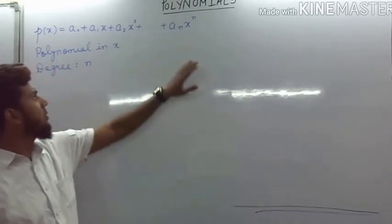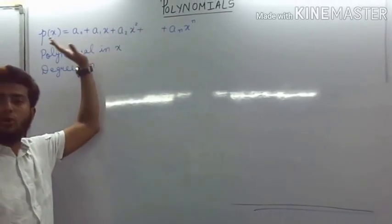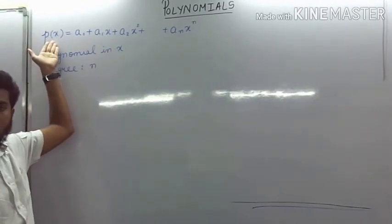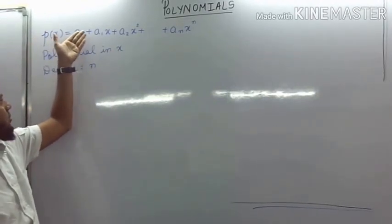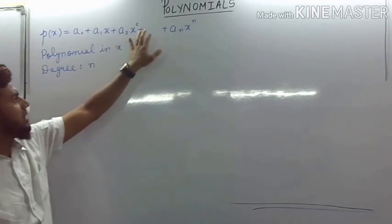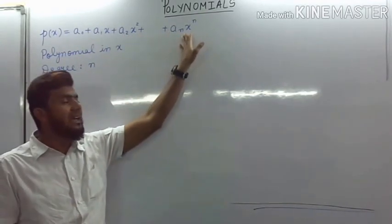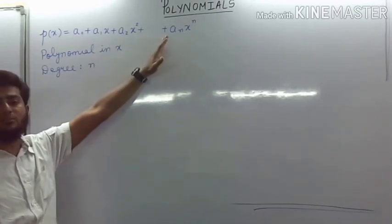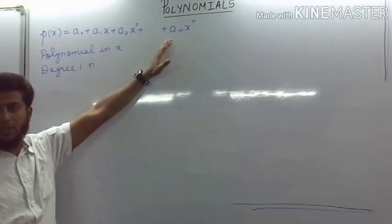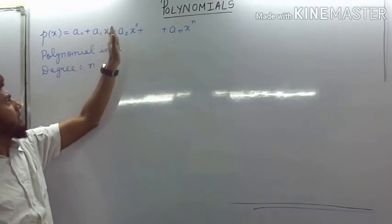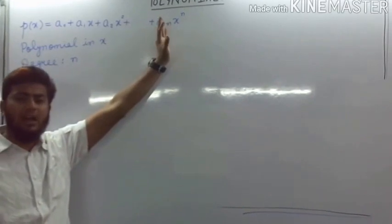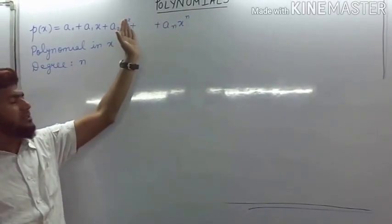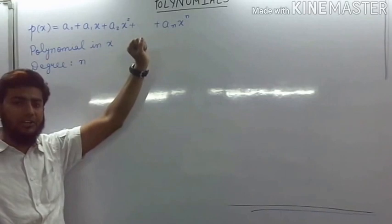Here on the board we have a particular general form of a polynomial. p of x is denoted by p(x) and it is a0 plus a1x plus a2x squared, till an x raised to n. These are n plus 1 terms in a polynomial where a0, a1, a2 till an are some arbitrary constants and x is the variable in which the polynomial is written.